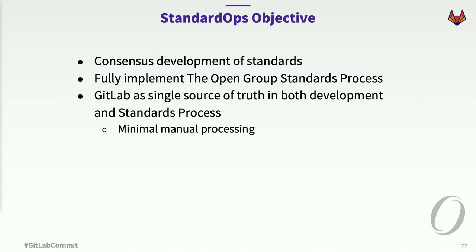We want to move beyond just the document creation phase. We want to get to something we're liberally stealing the idea for from elsewhere — something called Standards Ops. There's the development phase and then there's the operations phase. We want to have consensus development of standards that fully implements that open and transparent Open Group process, the collaboration among our members, using GitLab as the one source of truth — both in the development and the delivery phases — with minimal manual processing.